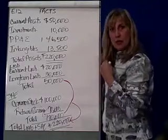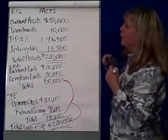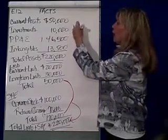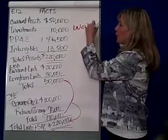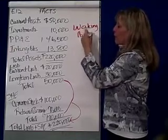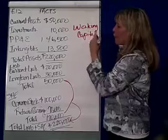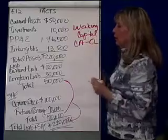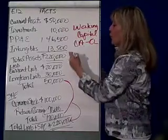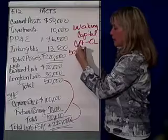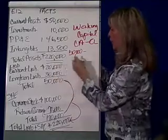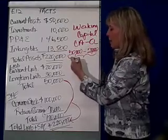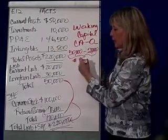The two liquidity ratios we're going to look at, based on exercise 12, are called the working capital ratio — or what is working capital? That's current assets minus current liabilities. Here we have current assets of 50,000 and current liabilities of 20,000, so working capital is 30,000.